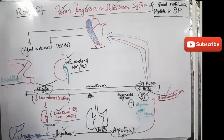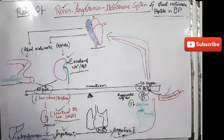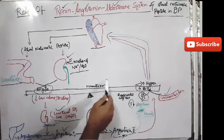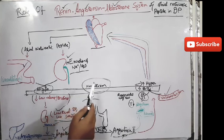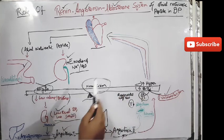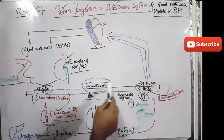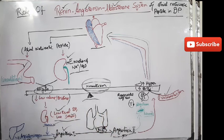So this is the role of the renin-angiotensin-aldosterone system and atrial natriuretic peptide in the maintenance of normal tension, that is the balance between hypotension and hypertension.